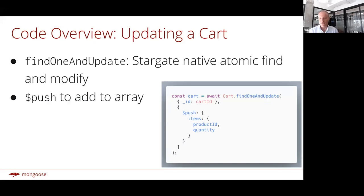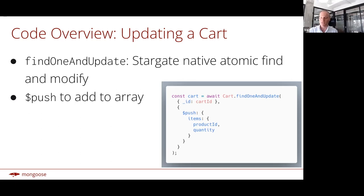For updating a cart, there are several ways to update an existing cart, but one particularly interesting one is findOneAndUpdate. This is a command that's native in the Stargate JSON API — it's an atomic find and modify. So you atomically load a document, apply some updates, and then pass the updated document back to the user. It also supports all sorts of cool query update operators, like the $push operator, which lets you update the items array and push on a new quantity and product ID.